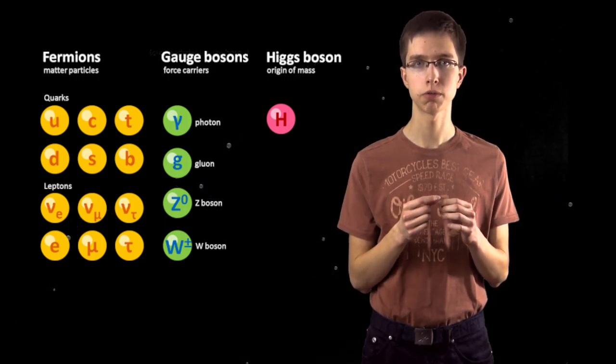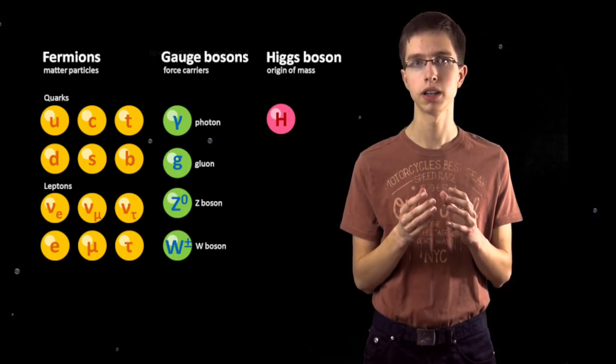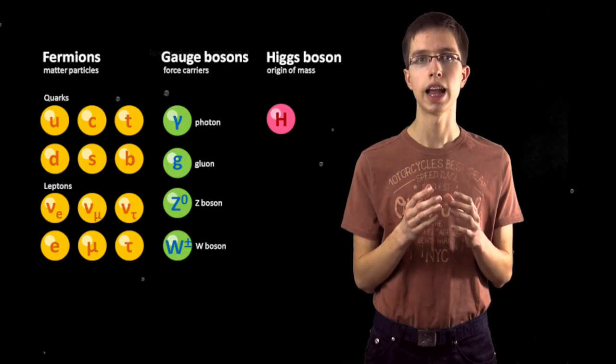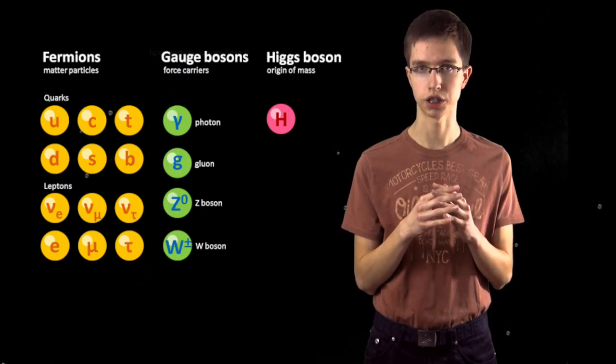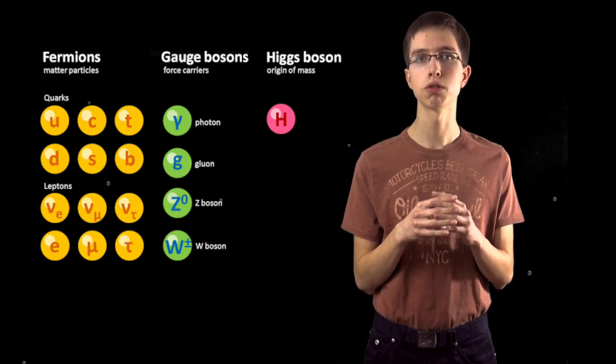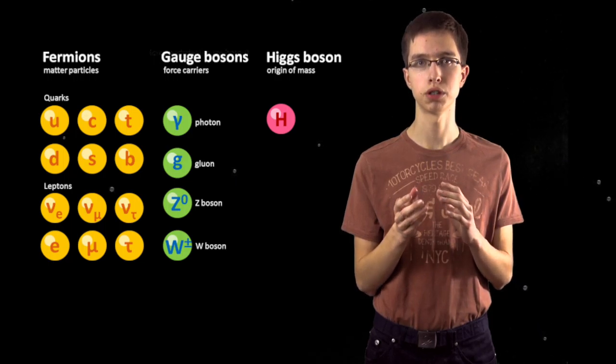So we have fermions, which give mass to matter, such as quarks and anti-quarks, which build up nucleons, that is protons and neutrons, and take part in strong interaction. Then leptons and antileptons, responsible for electroweak interactions, such as electrons and positrons.